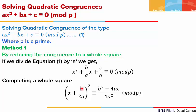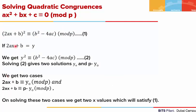We add b²/4a² on both sides to complete the square, and shift the term c/a to the right-hand side. Taking the LCM, we get (2ax + b)² ≡ b² - 4ac mod p.